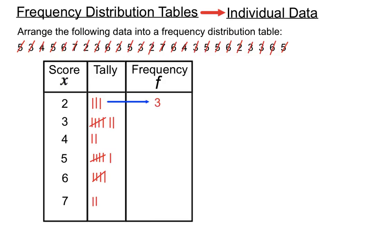So there's 3 markings for the 2, so there's a 3 to indicate that the score of 2 occurred 3 times. There are 7 threes, there are 2 fours, 6 tally marks there for 5, there's 5 tally marks there for 6, and 2 tally marks for 7. So that's our completed frequency distribution table.